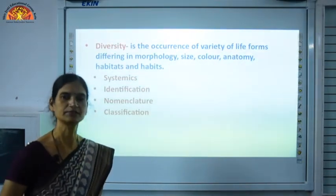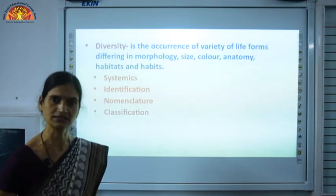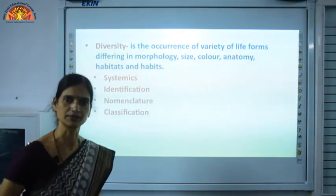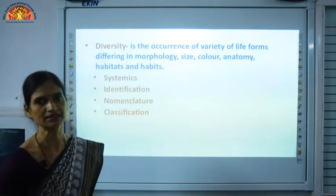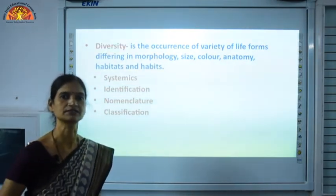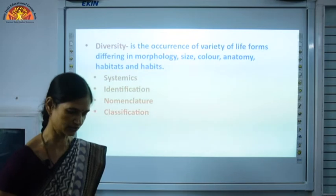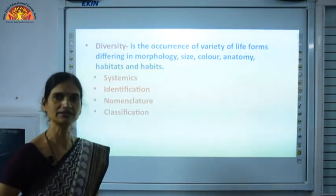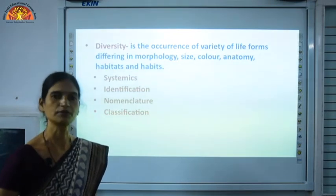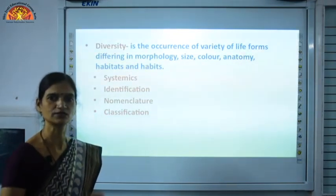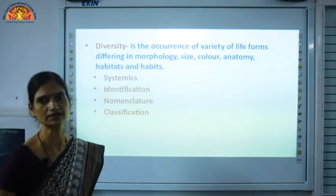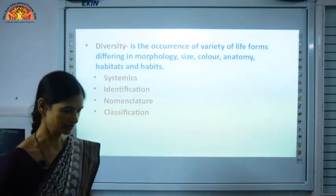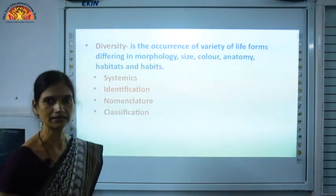The first word in a biological name represents the genus, and its first letter is capital. But when we write the species name alongside it, its first letter is small. These are rules you need to remember. And if you are writing the name by hand, we underline them — but we underline genus separately and species separately.